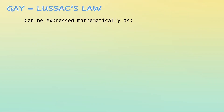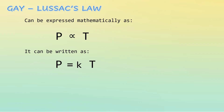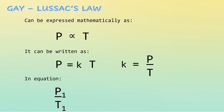Gay-Lussac's Law can be expressed mathematically as: pressure is directly proportional to its temperature. It can be written as pressure is equal to the proportionality constant times temperature in Kelvin. The proportionality constant is equal to pressure over temperature. In equation form, P1 over T1 is tantamount to P2 over T2.